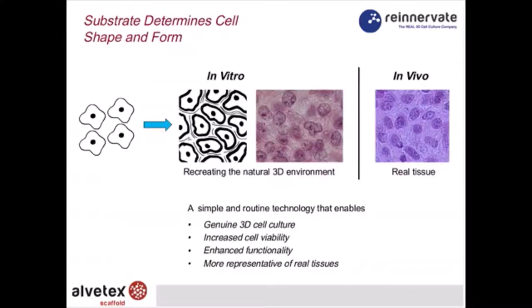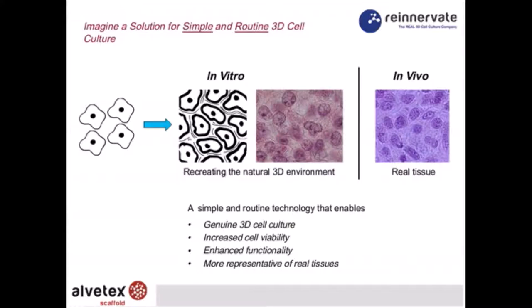To summarize: in vitro, we are trying to recreate a more in vivo-like, natural three-dimensional environment. We want to do this in a simple and routine way to enable those who currently practice conventional 2D culture to now consider growing cells in three dimensions to create a more relevant physiological model. This technology will enable 3D culture, enhanced viability, enhanced functionality, and the creation of more representative real tissues. This is what Alvitex is all about.